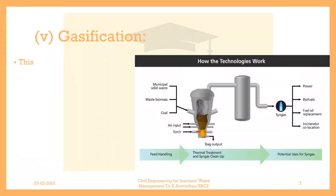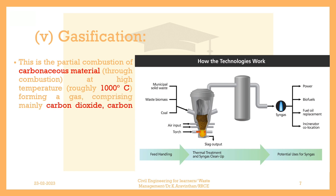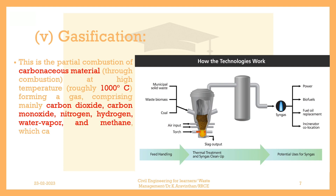Gasification. This is the partial combustion of carbonaceous material through combustion at high temperature — roughly 1,000 degrees Celsius — forming a gas comprising mainly carbon dioxide, carbon monoxide, nitrogen, hydrogen, water vapor, and methane, which can be used as fuel.